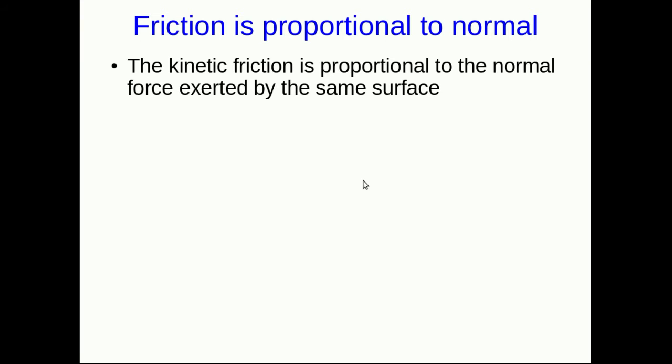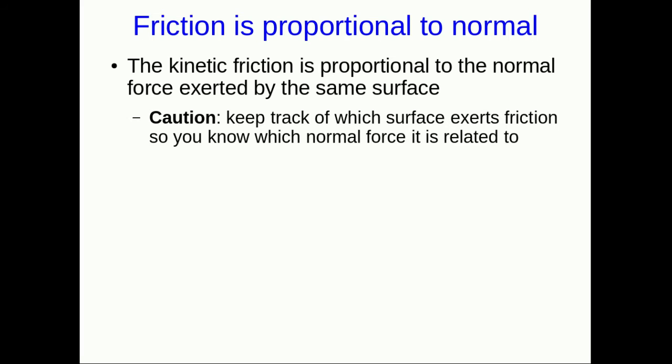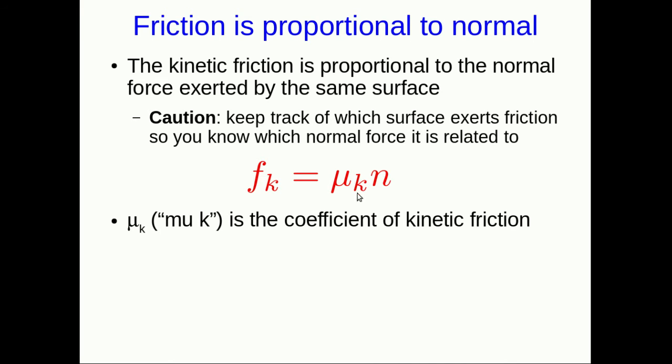We're now ready to write down an equation that we can use to calculate kinetic friction, now that we know it's proportional to the normal force. Be careful, it's proportional to the normal force exerted by the same surface that's exerting the kinetic friction. Keep track of agents. Which surface is exerting the kinetic friction that you're calculating? It's proportional to the normal force exerted by that same surface. The equation for it is: the friction is just this μ_k, which is called the coefficient of kinetic friction, times n, the normal. Notice there are no vector symbols in this equation. This is a statement about the magnitudes of these forces. If you were to put vector symbols on it, it would be wrong, because the normal force is perpendicular to the surface exerting it, and this friction force is parallel to the surface, and so they can't possibly be pointing in the same direction.